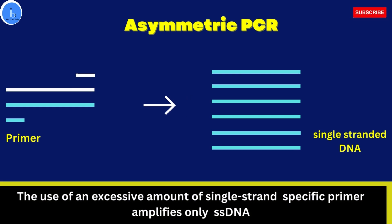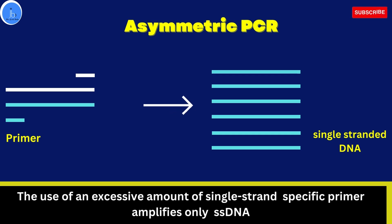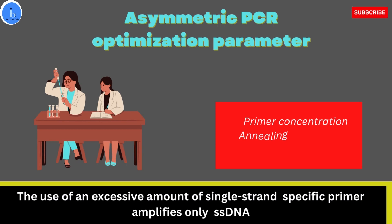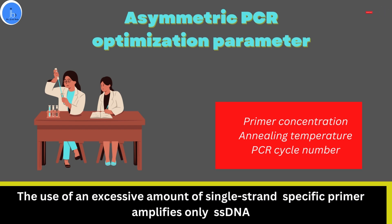Looking at the principle of asymmetrical PCR: during asymmetrical PCR, we use an excessive amount of a single-stranded primer specific to the target strand. The ratios and concentration can vary — for example, you can use 10 times higher volume of the target-specific primer. Standardization of the asymmetrical PCR reaction will be required based on your template, primers, and experimental needs.